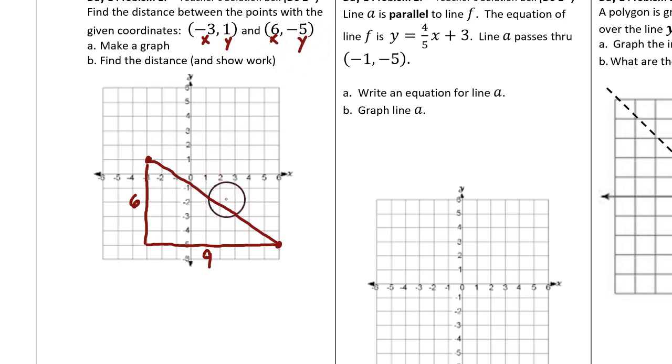Now let's call the length of the diagonal side C. The 6 is the letter A in the Pythagorean theorem, and the 9 is the letter B in the Pythagorean theorem. So A squared plus B squared equals C squared.